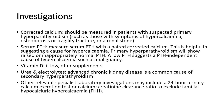For investigations, corrected calcium should be measured in patients with suspected primary hyperparathyroidism, such as those with symptoms of hypercalcemia, osteoporosis or fragility fracture, or a renal stone. Serum PTH is helpful in suggesting a cause for hypercalcemia: primary hyperparathyroidism will show raised or inappropriately normal PTH, while a low PTH suggests a PTH-independent cause such as malignancy. Urea and electrolytes should also be checked, as advanced chronic kidney disease is a common cause of secondary hyperparathyroidism. Other relevant investigations may include a 24-hour urinary calcium excretion test or calcium-creatinine clearance ratio to exclude familial hypocalciuric hypercalcemia.